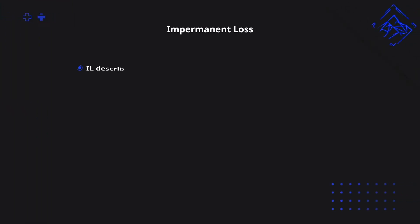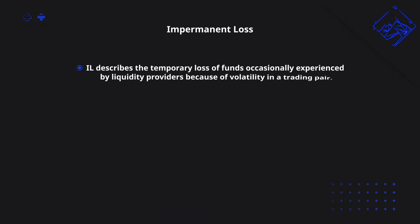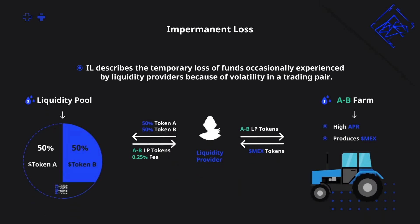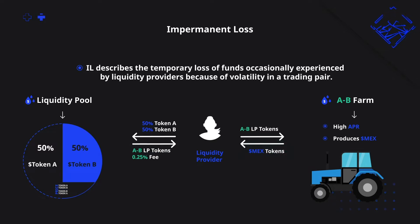Impermanent loss describes the temporary loss of funds occasionally experienced by liquidity providers because of volatility in a trading pair. This is not taking into consideration the 0.25% fees that the LPs capture, or the rewards from farming, which could mitigate those losses and could still make providing liquidity a highly profitable venture.